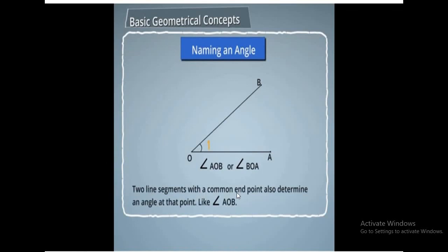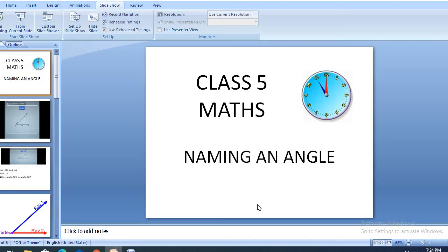Two line segments with a common end point also determine an angle at that point, like angle AOB. I hope now you can write the name of any angle which is given. Write always in capital letters. The vertex should be in the centre. And you can use the symbol of angle for writing the name of an angle.